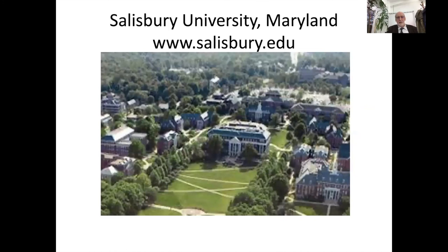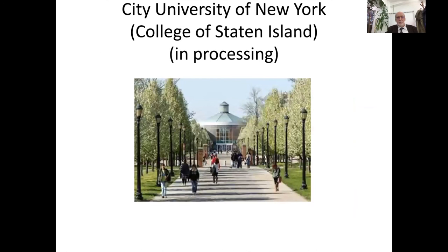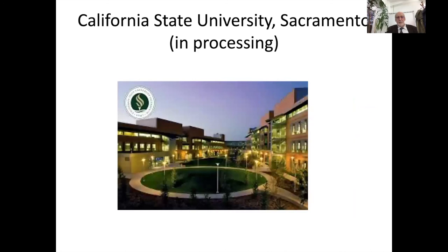This is Salisbury University in Maryland. Their website is www.salisbury.edu — an East Coast university with about 20,000 students enrolled. This is the City University of New York in Staten Island; this agreement is in processing and is part of the CUNY system. This is California State University in Sacramento, the capital of California — this agreement is also in processing.